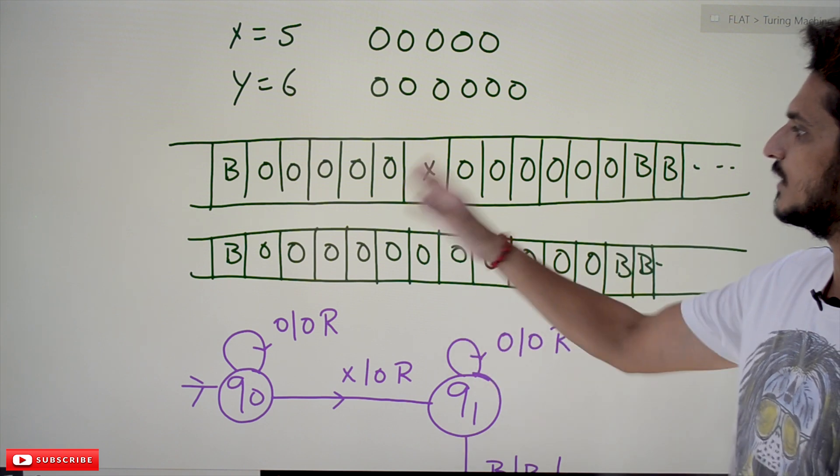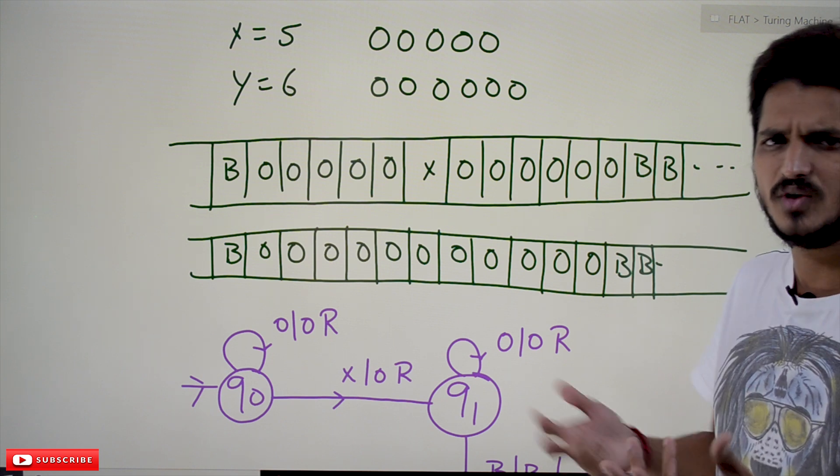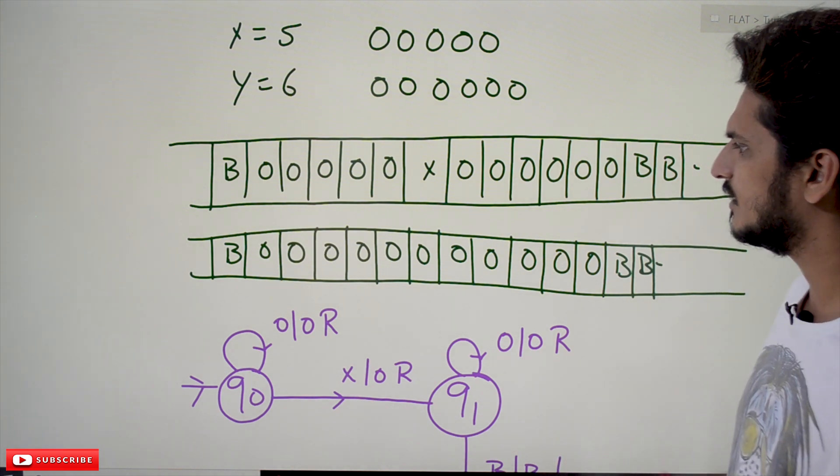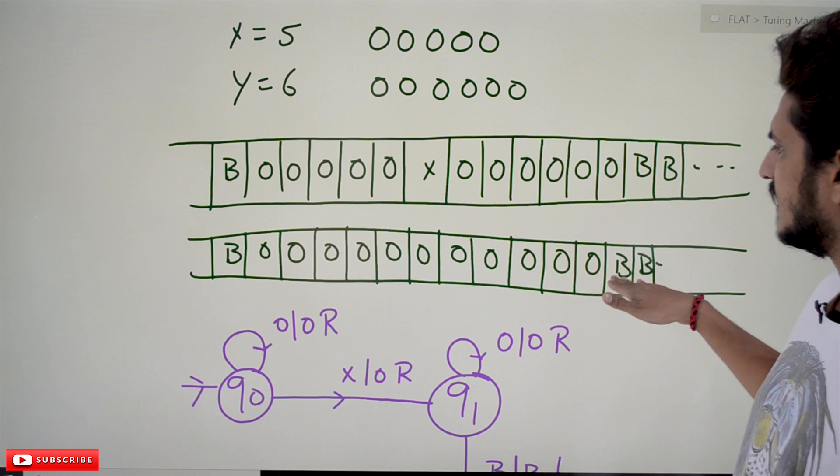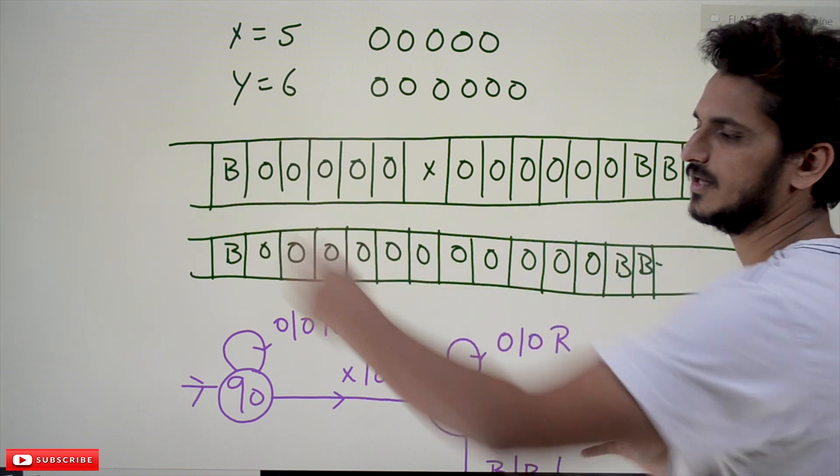Then total 11 zeros will be there on the tape. You can say that 5 plus 6 equals 11 is there. This is how we do addition - it's very simple. The logic is very simple. So the output is: finally the tape contains 11 zeros, blanks on one side and the other side also blanks.